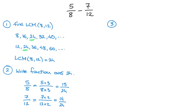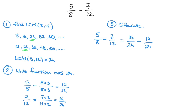Finally, step 3: we can calculate. We can write 5 over 8 minus 7 over 12 equals the fractions we just found in step 2 — so that's 15 over 24 minus 14 over 24. Since both fractions are written over 24, this equals 15 minus 14 on the numerator over 24. Finally, 15 minus 14 is 1, so that's 1 over 24. And that's the final answer.